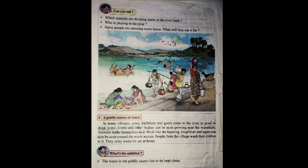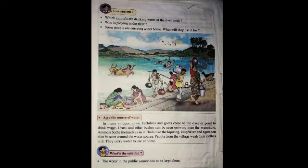The water in public sources has to be kept clean. We can follow some rules: do not throw garbage around the river — use a garbage bin. Do not wash clothes or vessels in the river. Never let animals bathe in the river. Put up banners and instruct people in town to keep the river clean and explain how we can keep water clean.